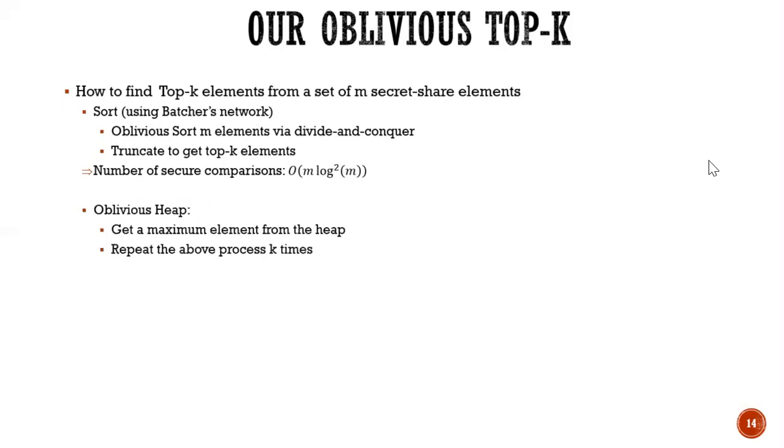So this solution requires a number of comparisons M log M squared. The second solution is using oblivious heap. So the heap allows you to get the maximum items from the heap. And it means to get the top K, you have to repeat the process K times. Therefore, the number of interaction rounds at least K log M.